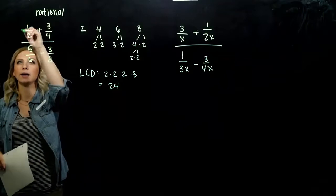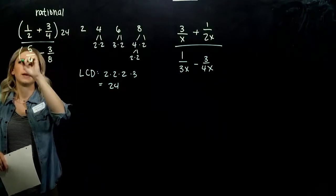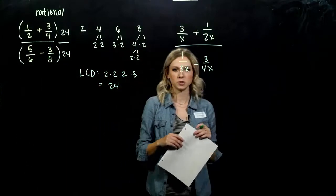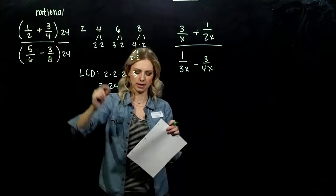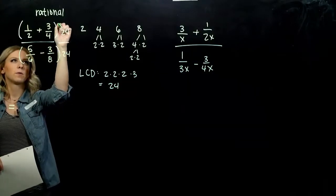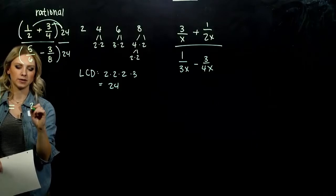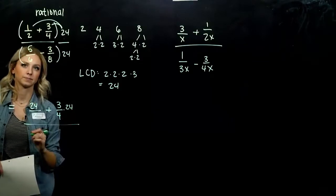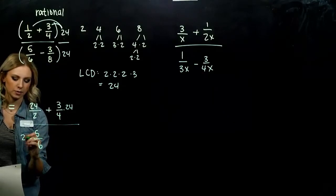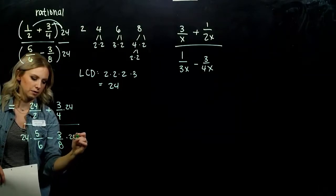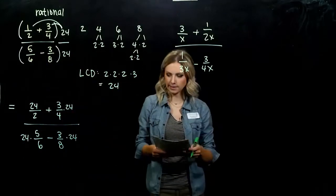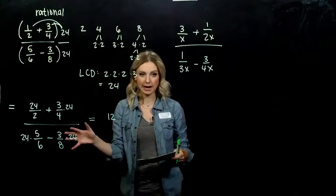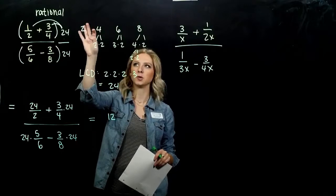We take 24 and multiply everything up top by 24 and everything down below by 24. Because when we multiply by the same thing divided by the same thing, we're really multiplying by 1 — just changing what it looks like. Distributing, we get 24 divided by 2 plus 3/4 times 24 on top. 24 divided by 2 gives 12, and 24 divided by 4 gives 6, so 6 times 3 is 18. We get rid of the denominators — we have 12 plus 18 on top.